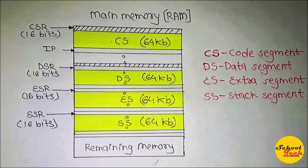CS is the Code Segment, ES is the Extra Segment, DS is the Data Segment, and SS is the Stack Segment. There are 4 types of segment as shown in the diagram, each with predefined functions.